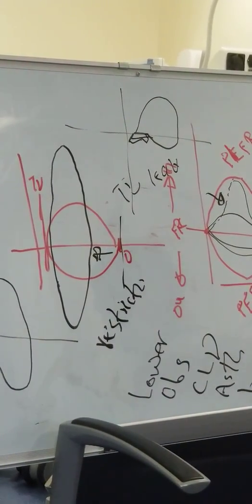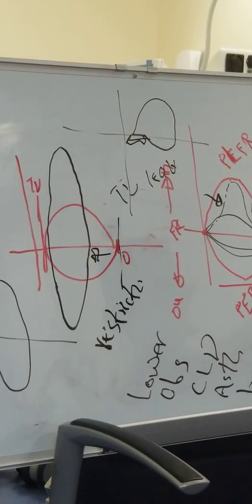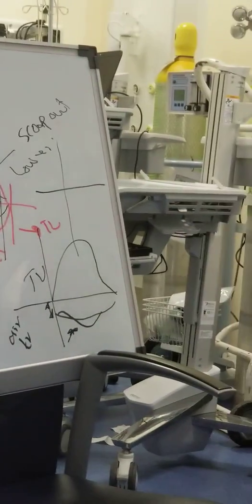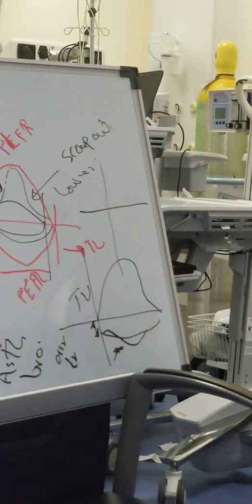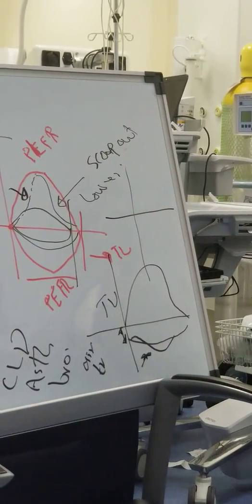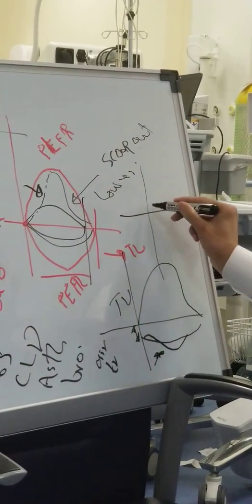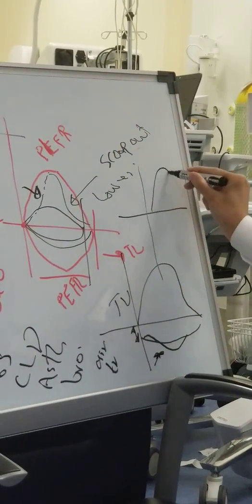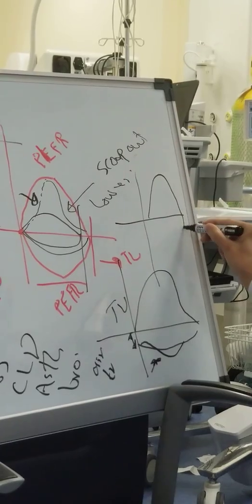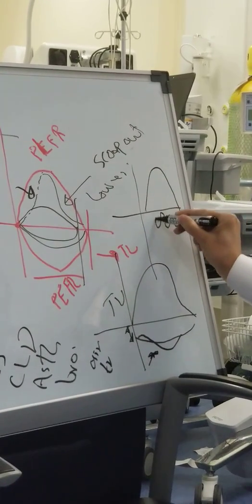Another important abnormality is secretions — sometimes called a sawtooth pattern. You can see the loop has a corrugated, irregular appearance rather than a smooth curve.